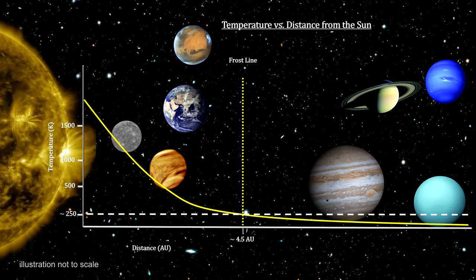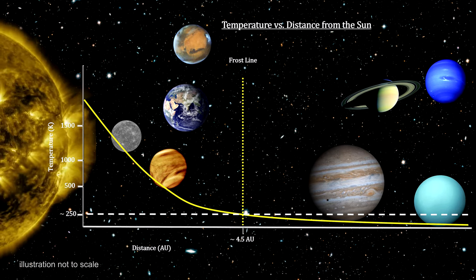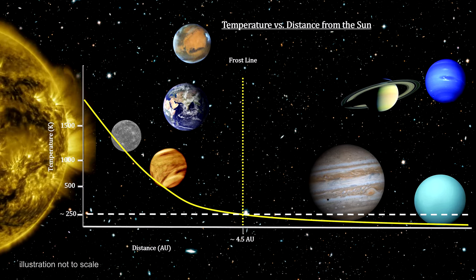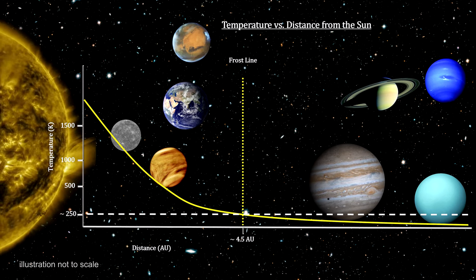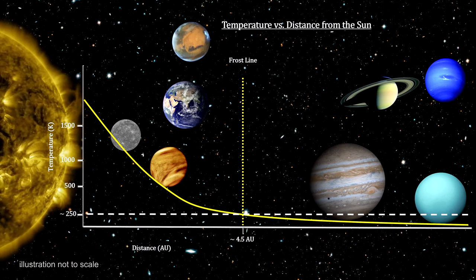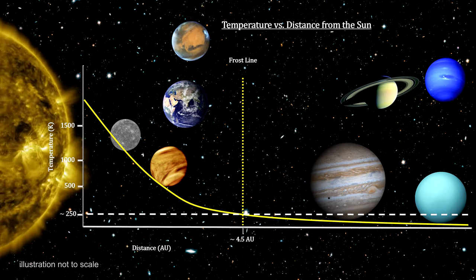This explains the difference between the rocky planets in the inner solar system and the gas giant planets in the outer solar system. Our frost line is between 4 and 5 astronomical units. That puts it at the far rim of the asteroid belt.